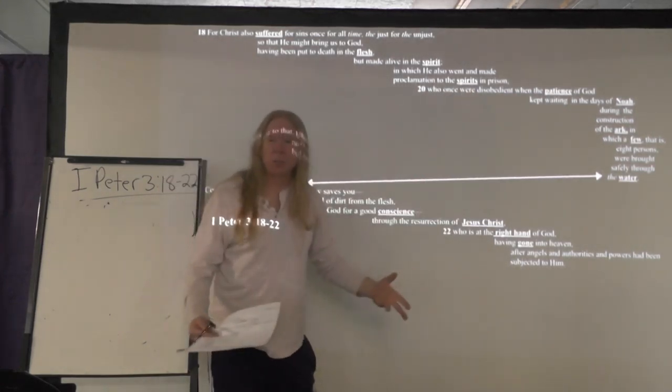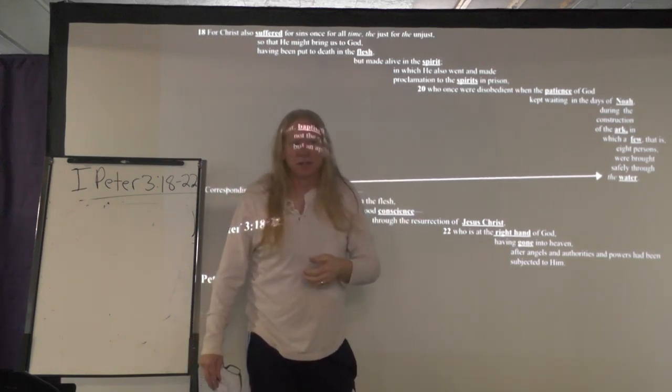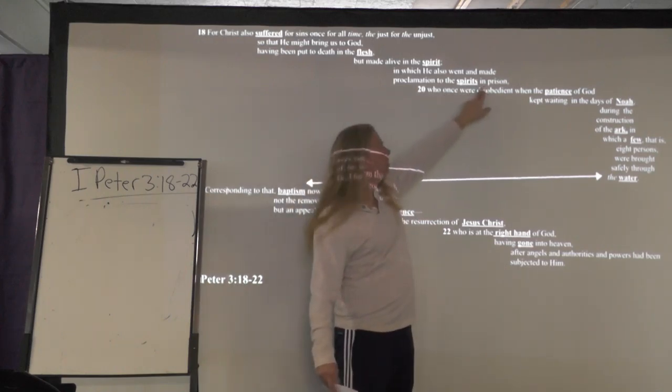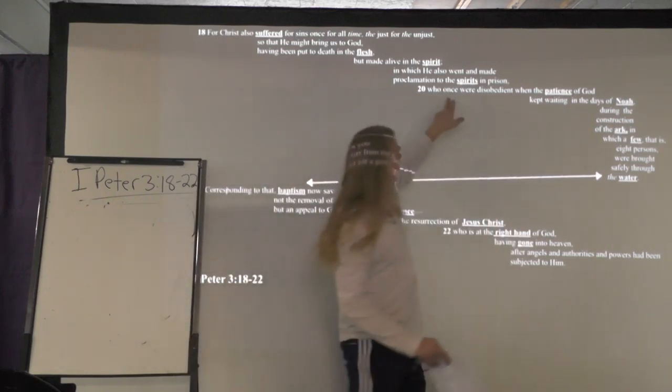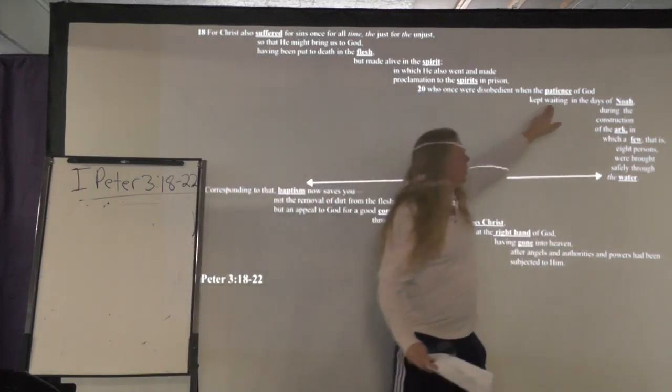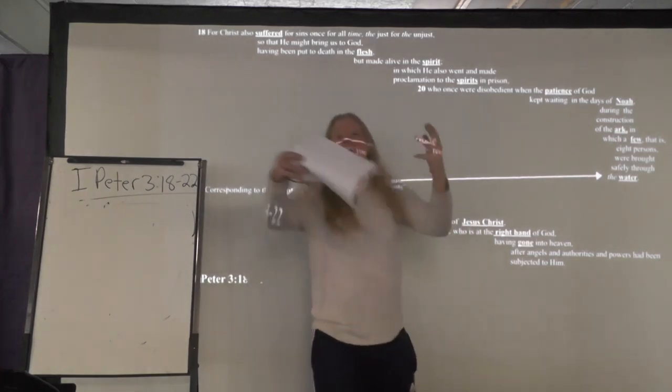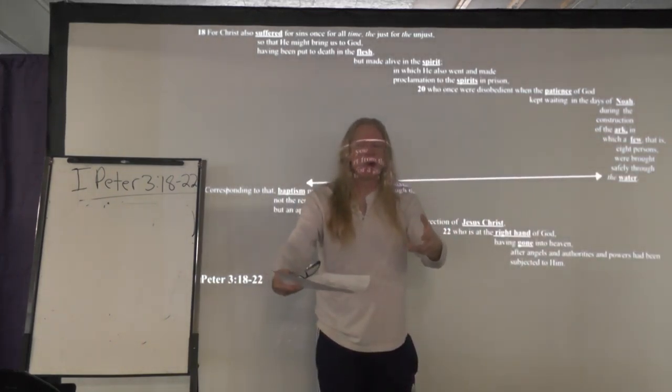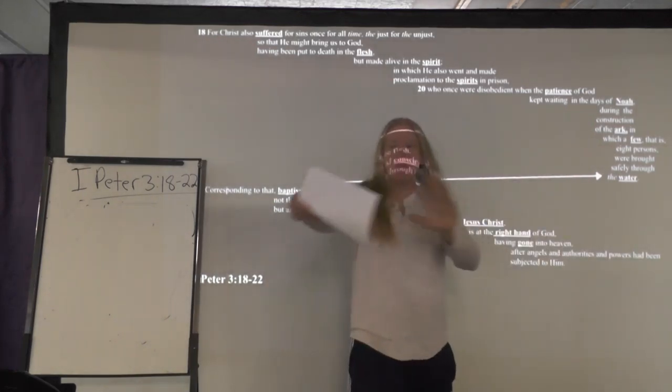This next phrase develops which spirits he's talking about, who were once disobedient. So, they were once time disobedient. When they walked on the earth, they did some really bad things, but that doesn't separate them from God. Not even the bad things that we do separate us from God's love. So, the spirits who were once disobedient, when the patience of God kept waiting in the days of Noah. Now, you notice, this is where it gets confusing. So, the spirits were once disobedient, when the patience of God kept them waiting. What time is he talking about? So, this next phrase develops the patience of God. He was patient at the days of Noah with people, because they were disobedient. Now he's going to develop who those people were at the time of Noah, during the construction of the ark. So, he's defining when that day of Noah was. Now he's going to define the ark, in which a few, that is eight persons, were brought safely through the water. So, eight people were brought through the water of the flood.